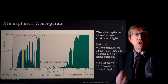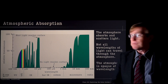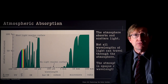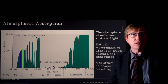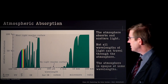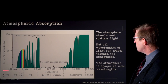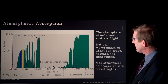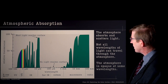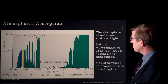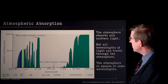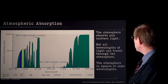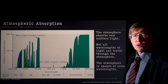The first problem is that the atmosphere absorbs light that travels through it. This plot describes the way in which the atmosphere absorbs light. On one axis we have the wavelength — the different colors of light. Over here we have ultraviolet light, then the visible spectrum, then infrared, far infrared, submillimeter, microwave, and finally radio waves.